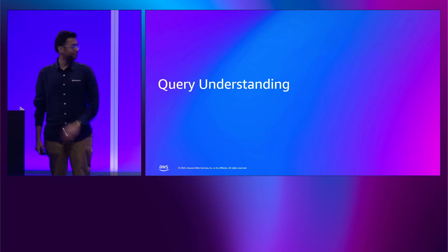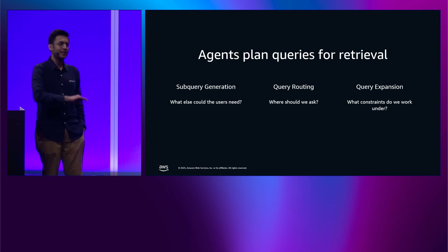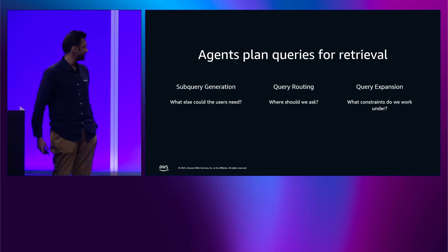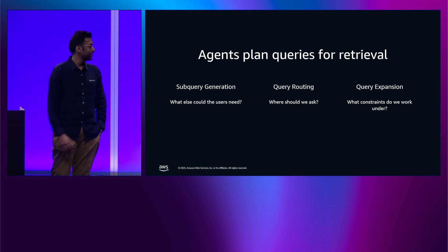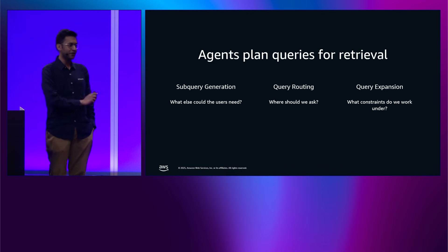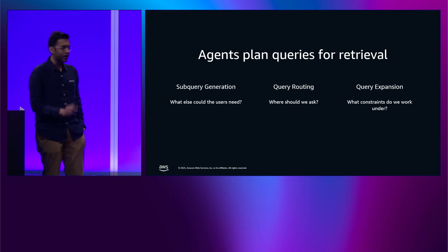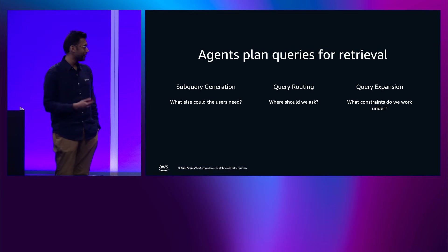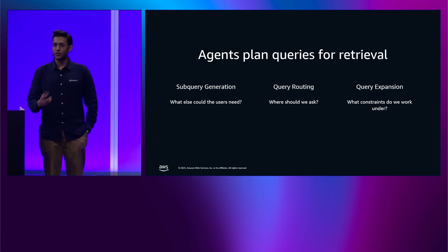Let's begin with query understanding. Agents are able to plan queries for optimal retrieval. In a traditional RAG system, the query hits the database directly. But an agent can modify the query or add additional queries to retrieve optimized context. There are three ways to accomplish this: subquery generation — what else could the user need based on their query? Query routing — where do we actually send that query and what databases are relevant? And query expansion — what other terms or concepts need to be included, and what constraints do we need to be aware of?